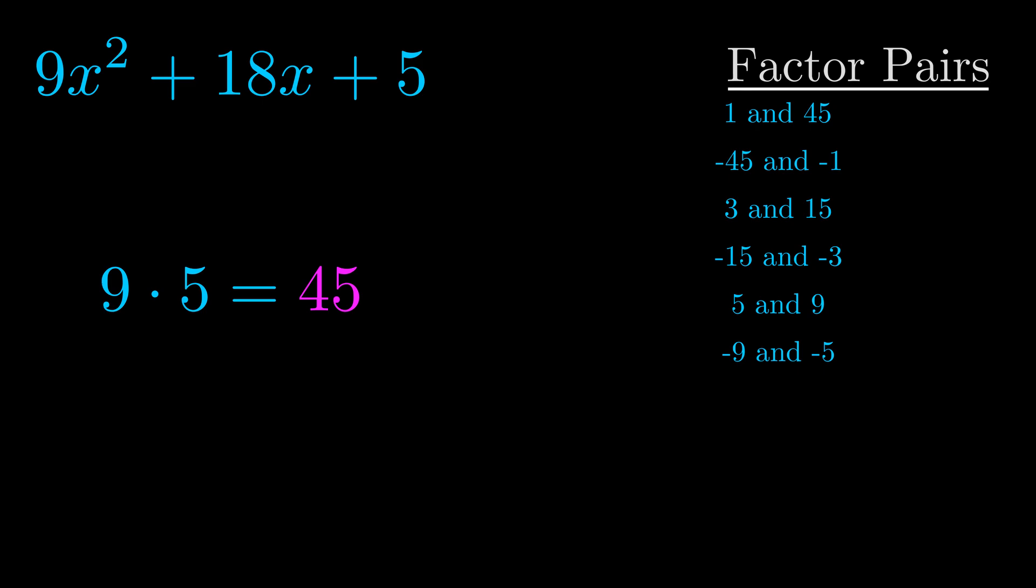The b value is the coefficient on the x term. That's the middle term, the one that we haven't done anything with yet. And really this is the only factor pair that we need.